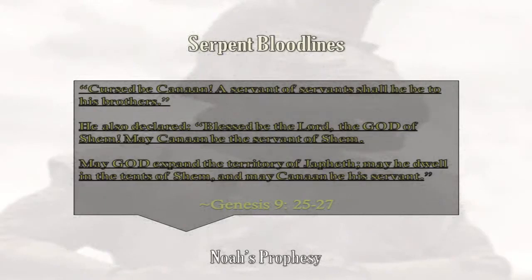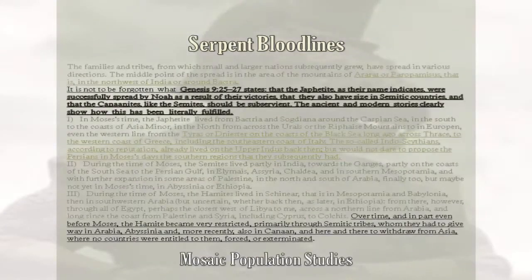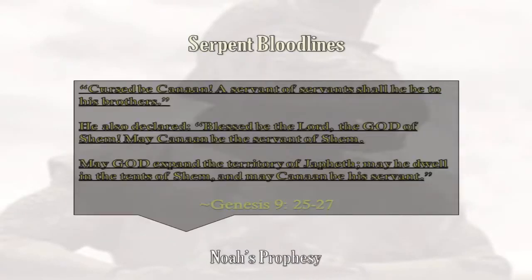Noah prophesied when he awoke from being drunk and knew what his youngest son Ham had done. He stated: 'Cursed be Canaan — a servant of servants shall he be to his brothers.' He also declared: 'Blessed be the Lord the God of Shem; may Canaan be the servant of Shem. May God expand the territory of Japheth; may he dwell in the tents of Shem, and may Canaan be his servant.' So Noah first cursed Ham's descendants the Nephilim, then blessed the humans and made giants their servants, and finally blessed the serpent seed with world rulership and placed them over positions of power with their father Lucifer, the bearer of dark light.